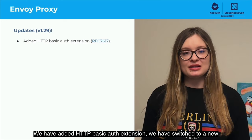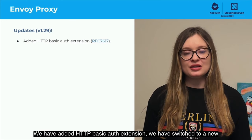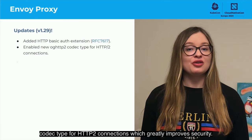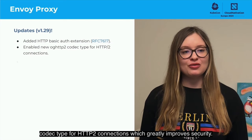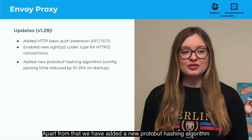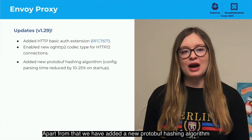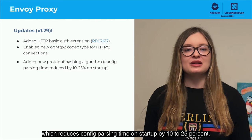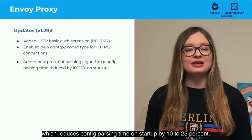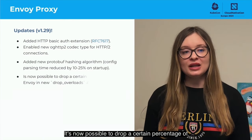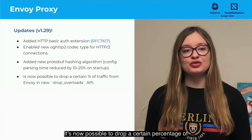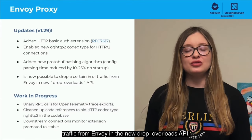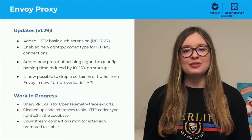We have added HTTP Basic Auth extension. We have switched to a new codec type for H2 connections which greatly improves security. Apart from that, we have added a new protobuf hashing algorithm which reduces config parsing time on startup by 10 to 25%. It's now possible to drop a certain percentage of traffic from Envoy in the new Drop Overloads API.